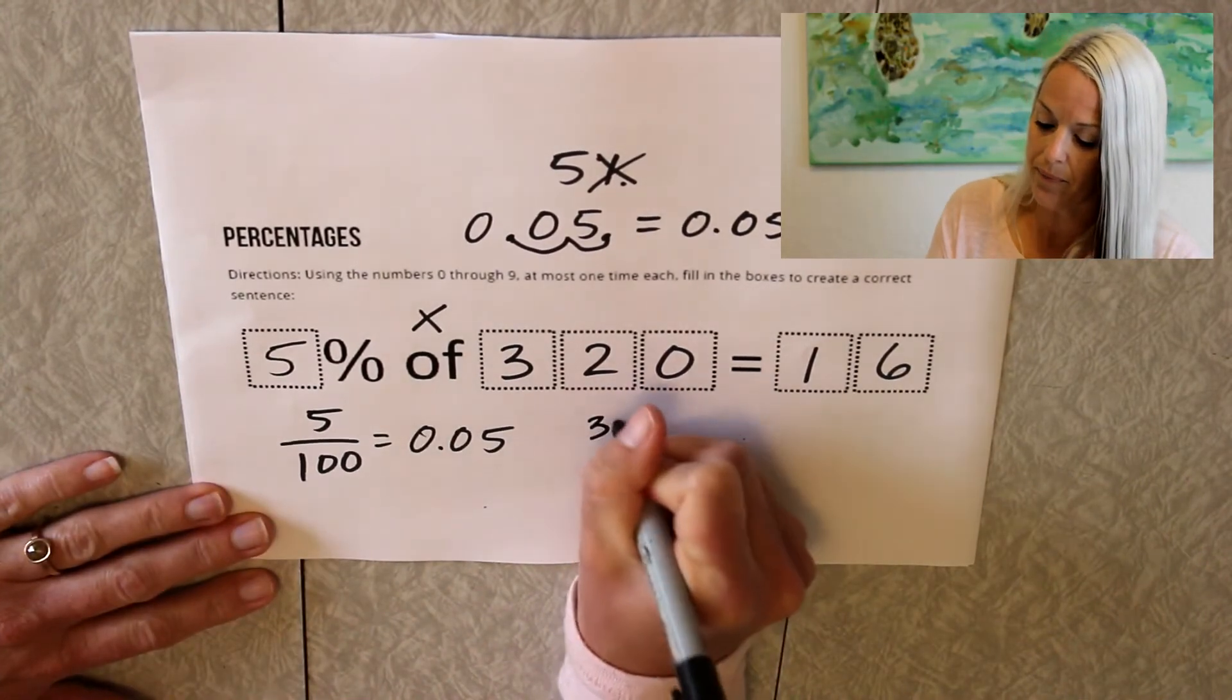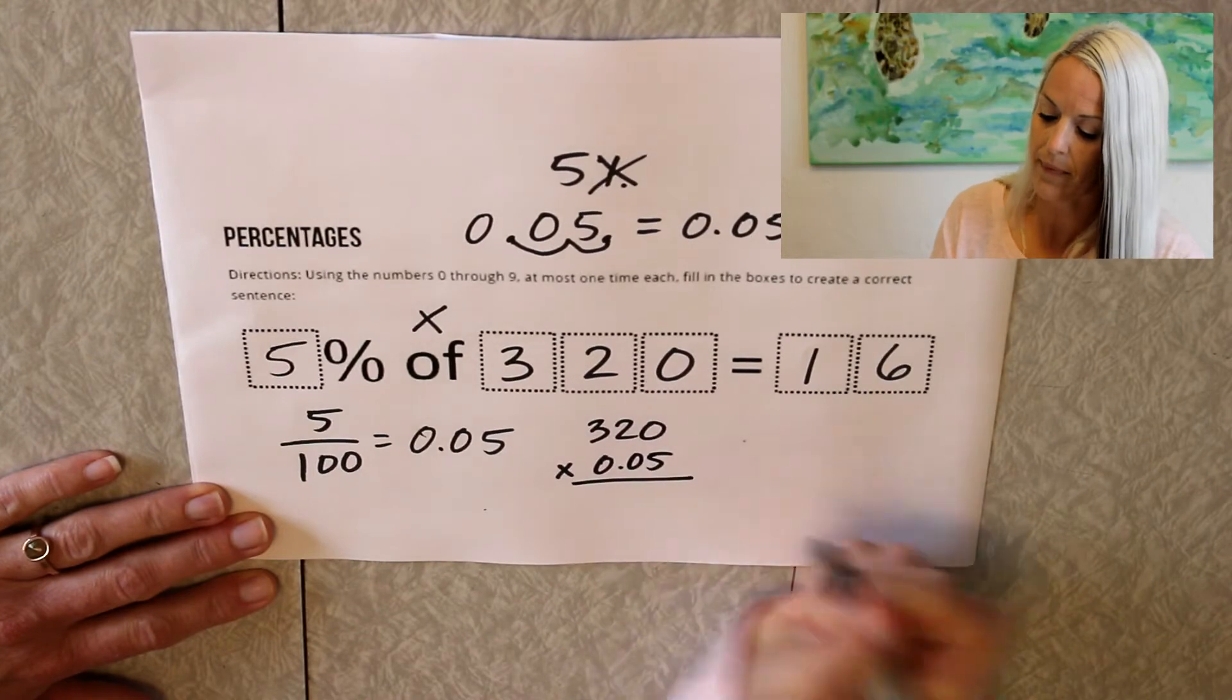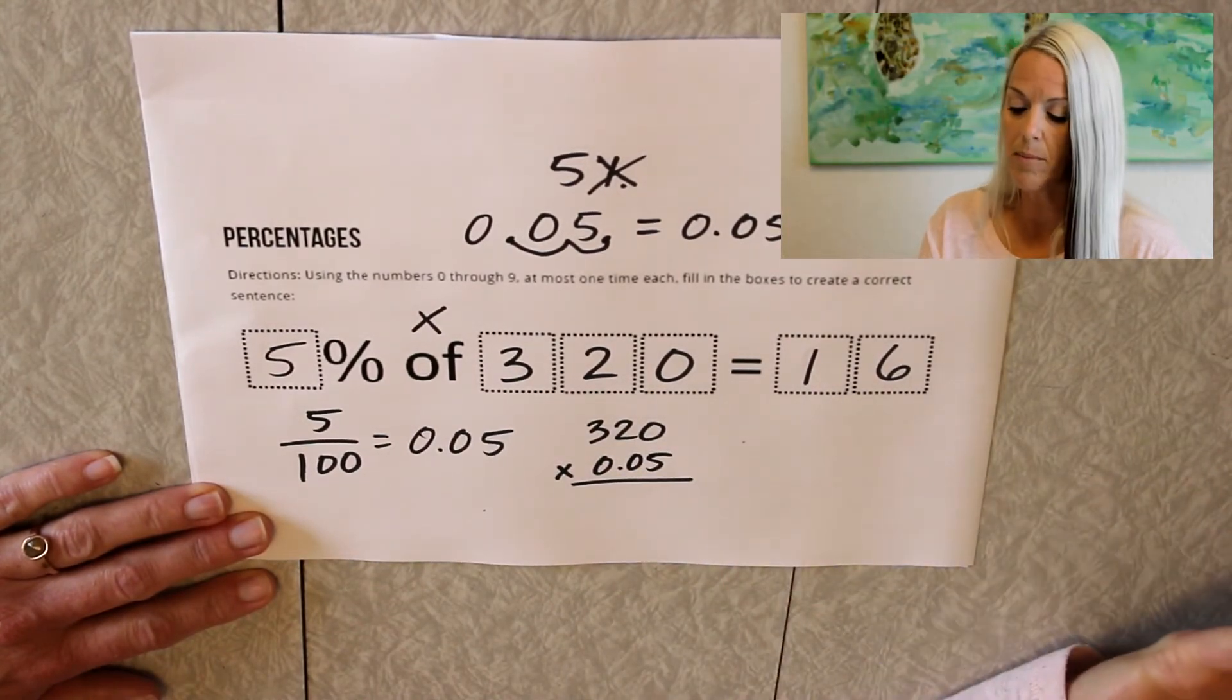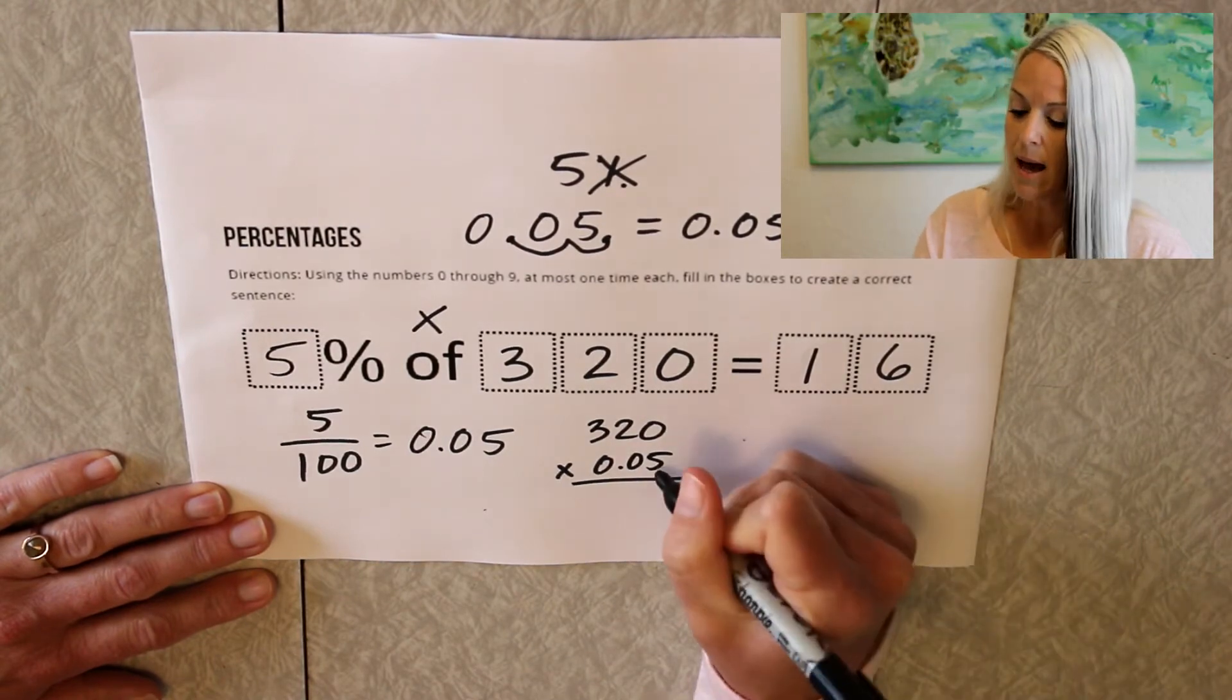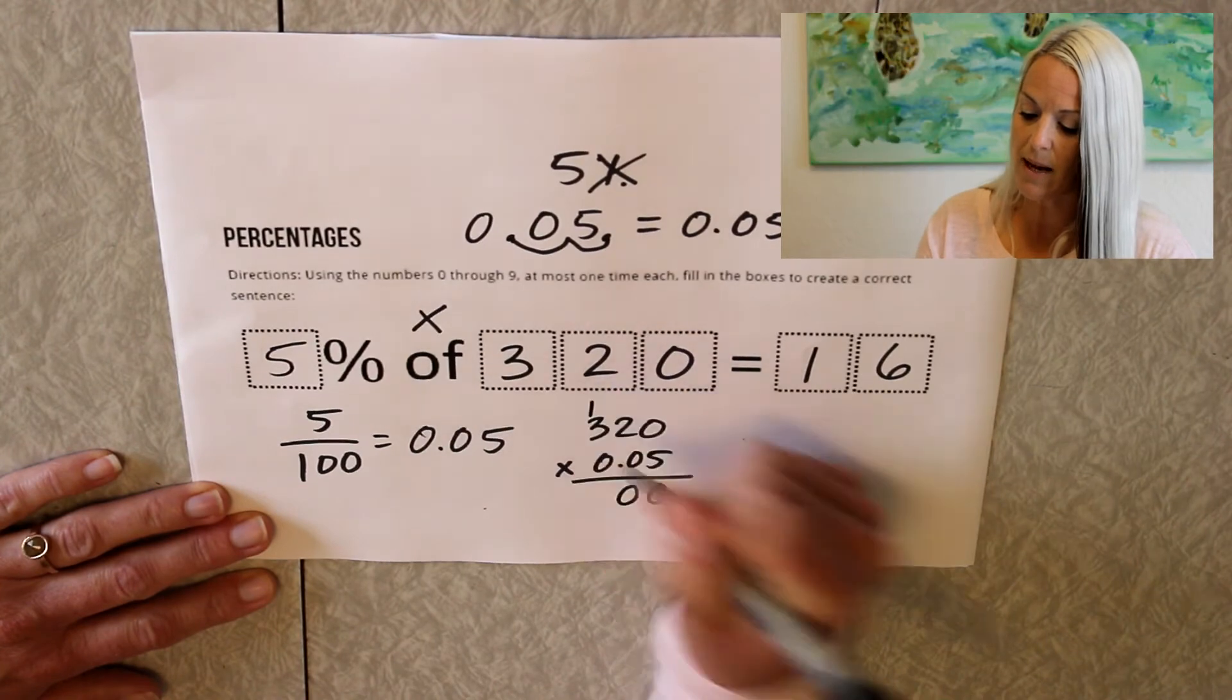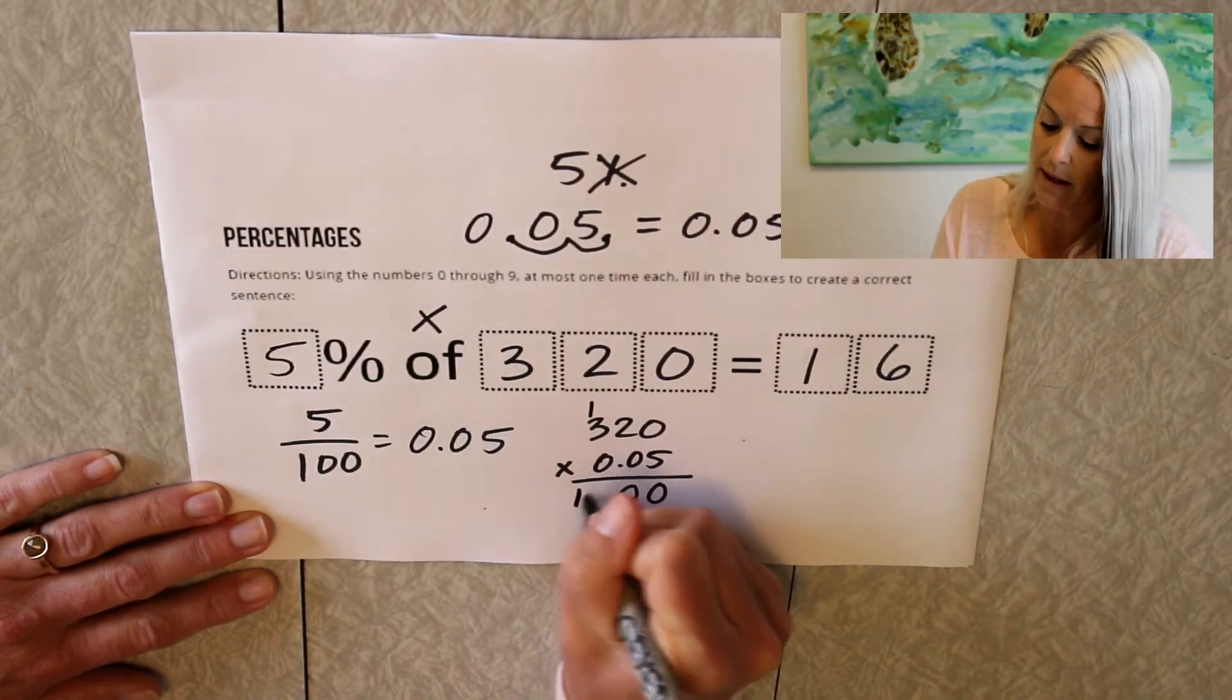So here we go. So I lined up my digits. It's not important to line up your decimal when you're multiplying. I'm going to multiply 5 by 0. 5 times 2 is 10, raise the 1. 5 times 3 is 15, plus 1 is 16.